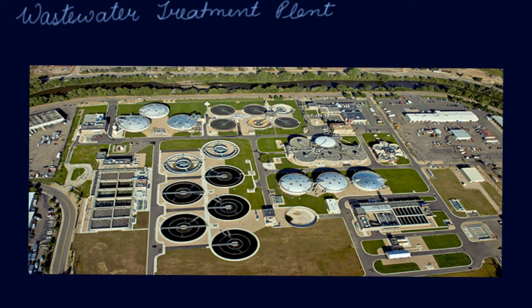In this wastewater treatment plant, firstly the wastewater is passed through a screen of vertical bars. You can see the screen of the vertical bars right here. The water is passed through first, which removes large solid materials such as plastic bags, cans, and stickers.